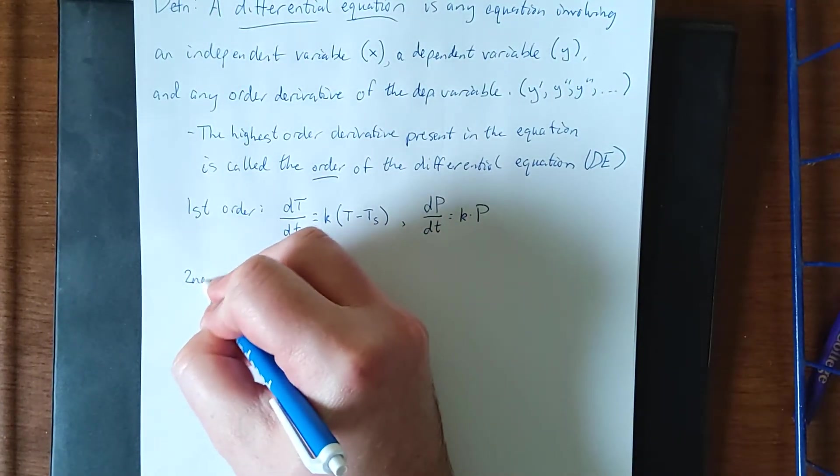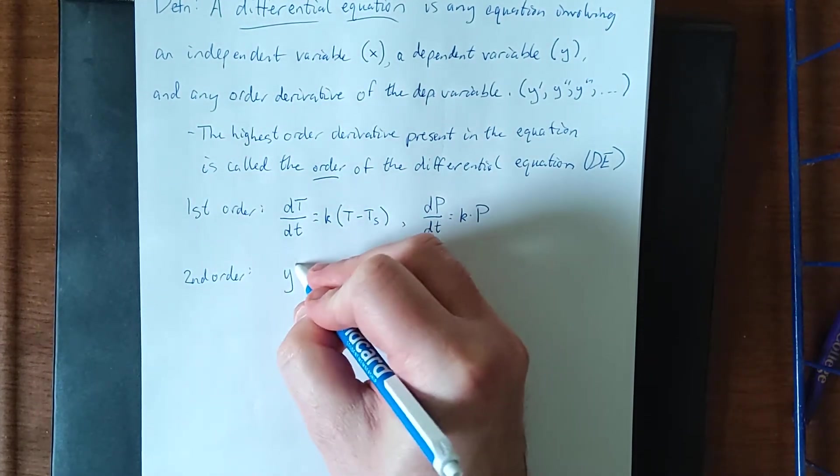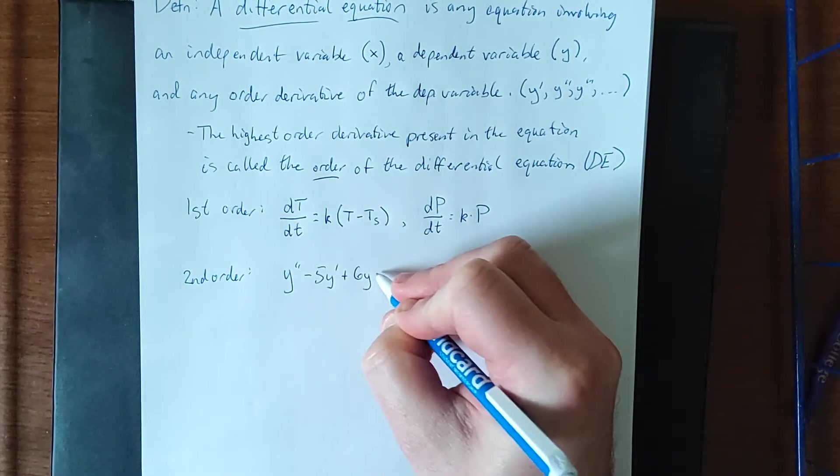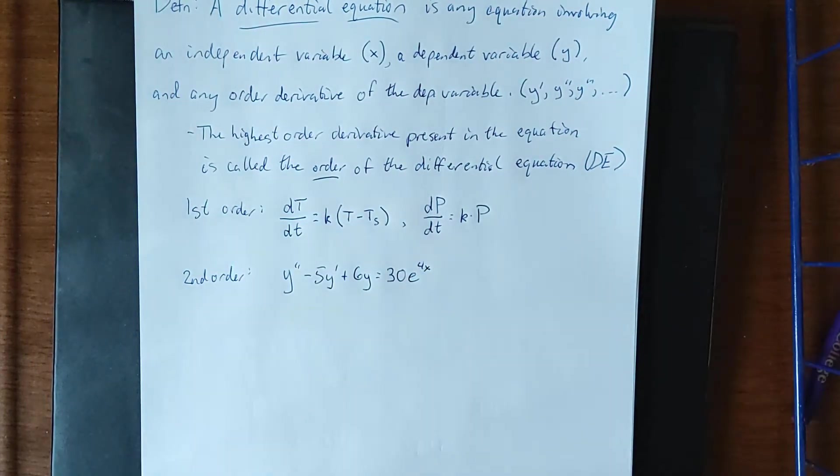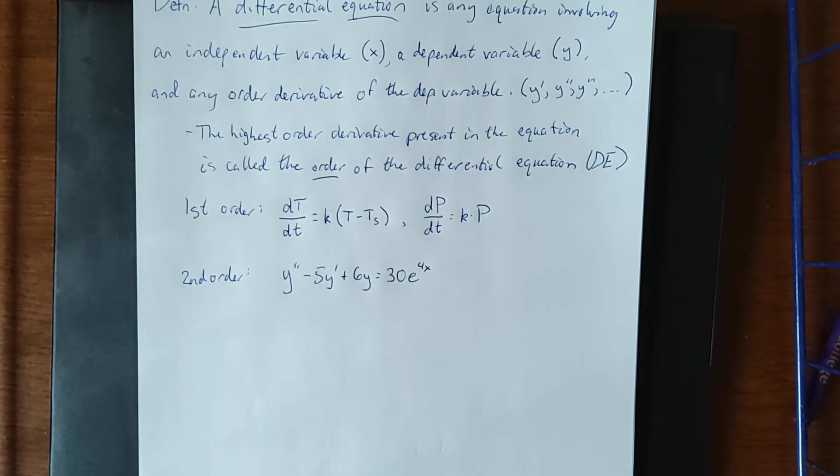An example of a second-order differential equation could be something like y double prime minus five times y prime plus 6y is equal to 30 times e to the 4x power. Very common second-order differential equation that you'll solve once you get up to any class of that caliber.